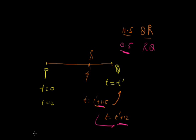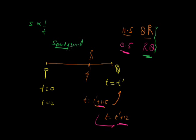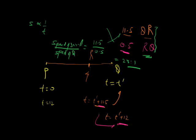Now I have Q to R and R to Q as the same distance. Since the distances are the same, speed is inversely proportional to time. So speed of sound upon speed of Q equals 11.5 upon 0.5, which is 23 to 1. This is the better way to solve the problem — find the equal distances, compare them, and get the answer.